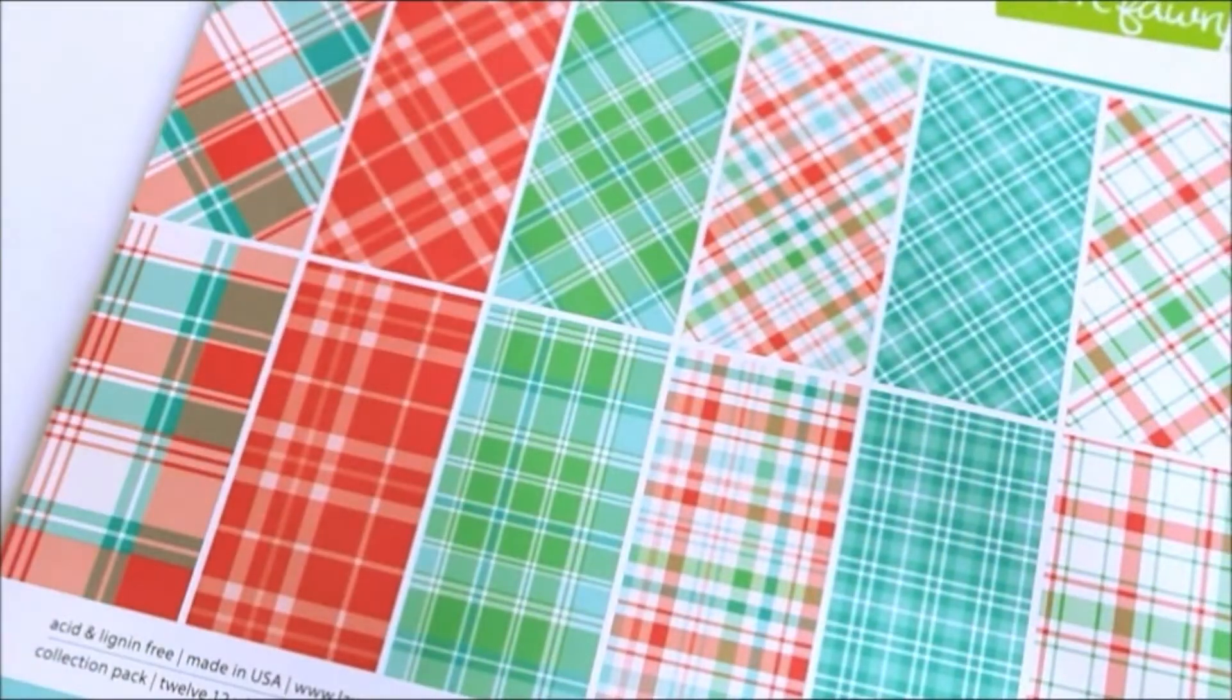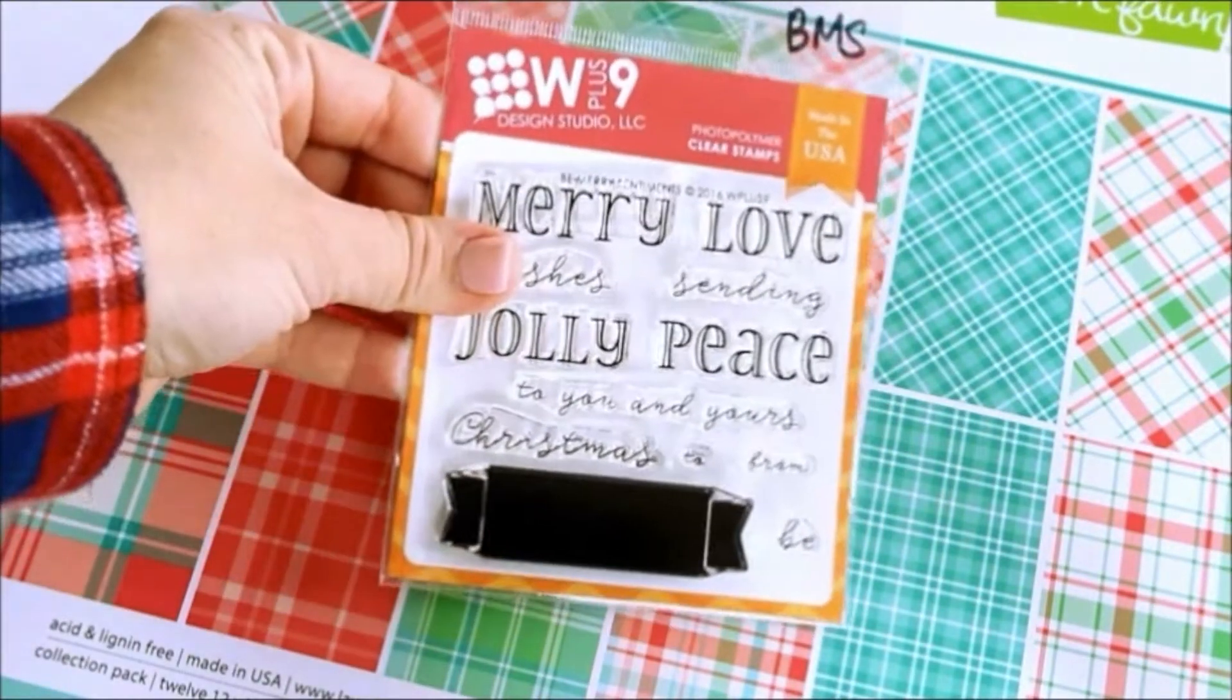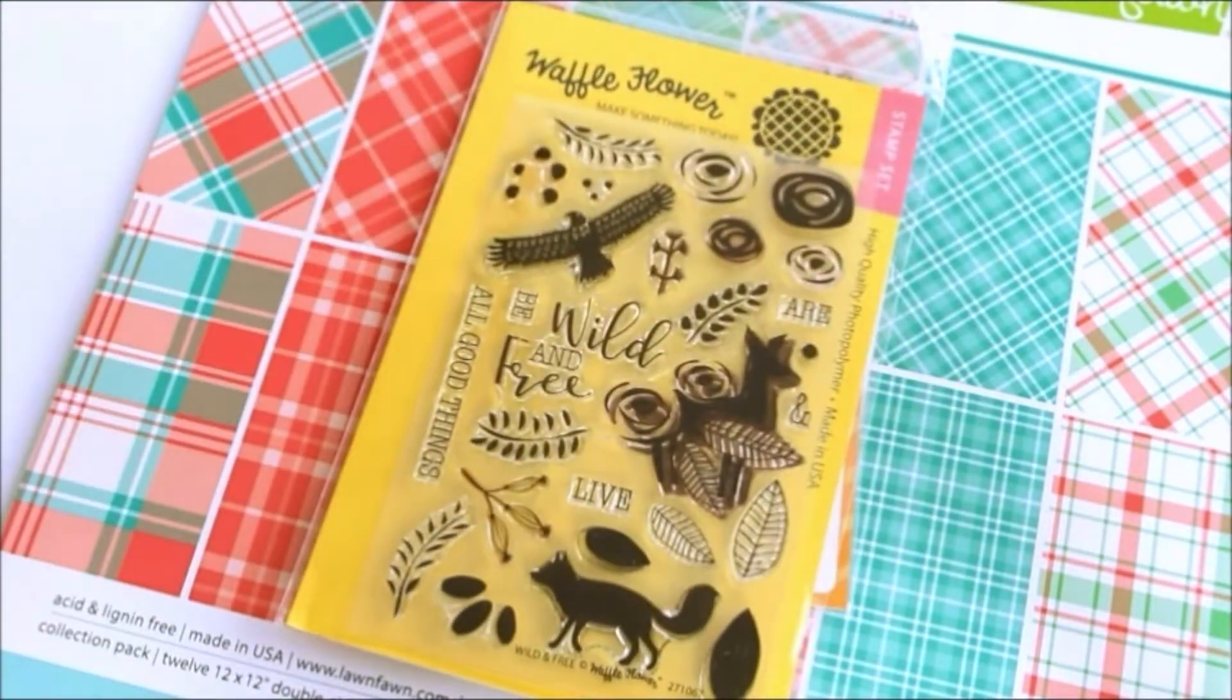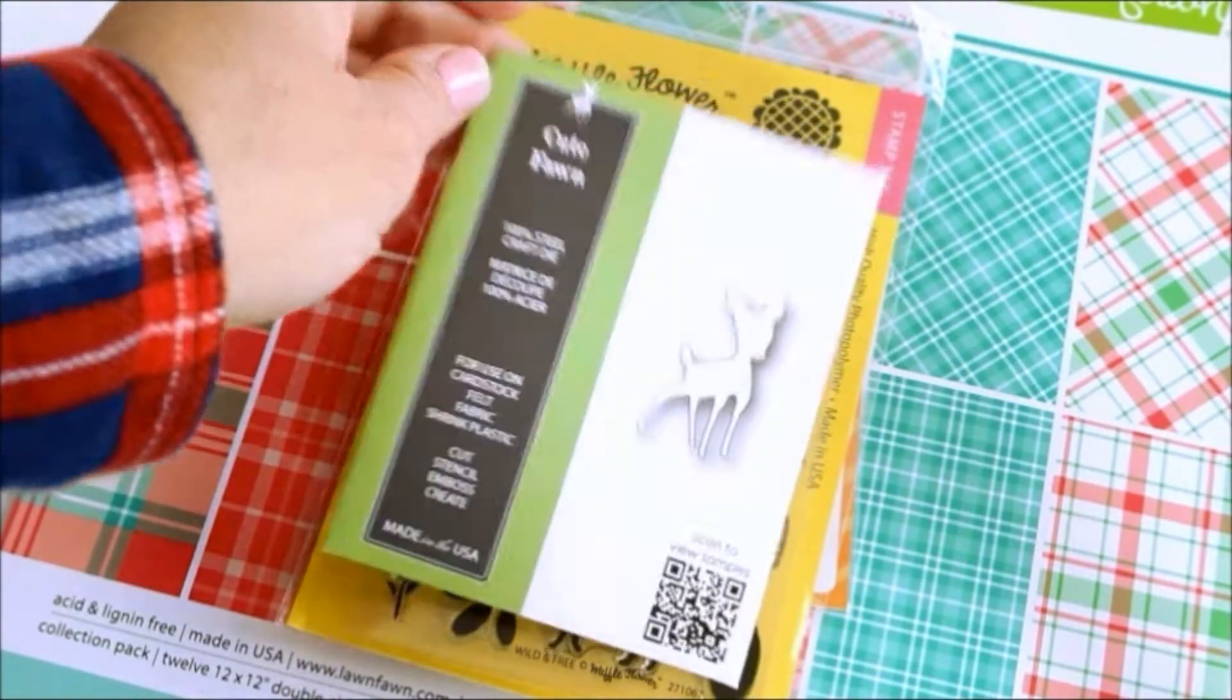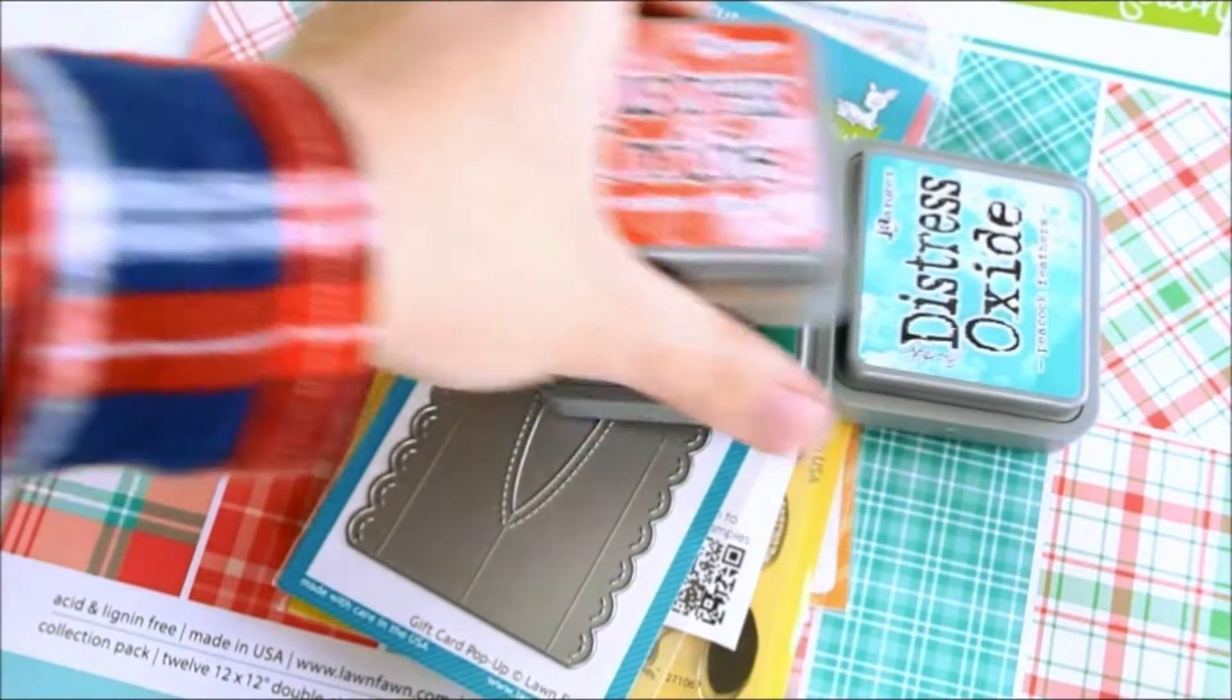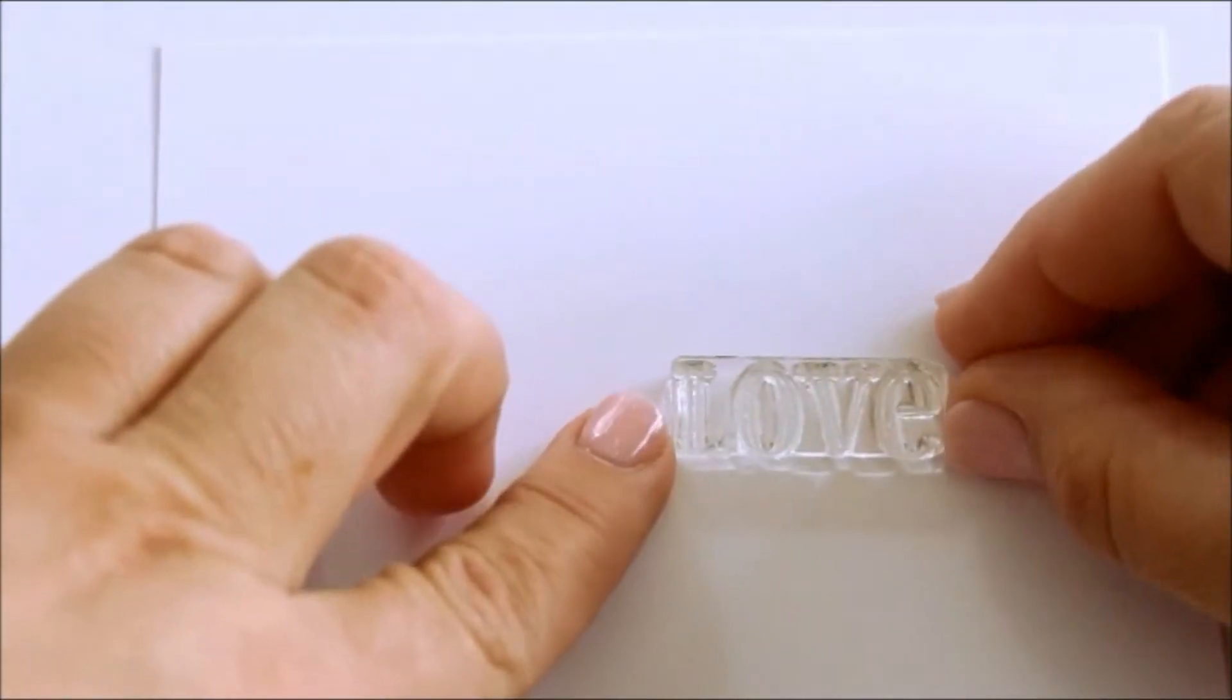Here are the products I've used. Some papers from Lawn Fawn. The W Plus 9 stamp set called Be Merry Sentiments. Waffle Flower stamp set called Wild and Free. A Poppy Stamps die called Cute Fawn. A Lawn Fawn die called Gift Card Pop-up. And some Distress Inks.